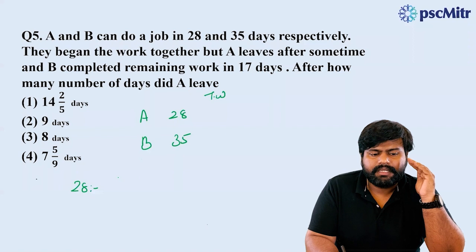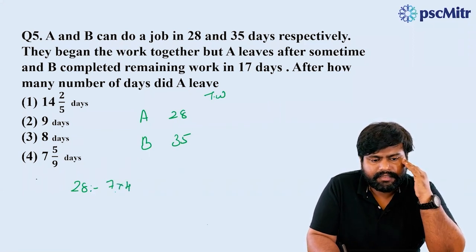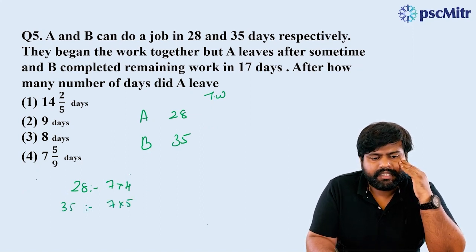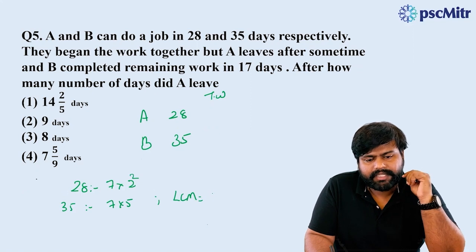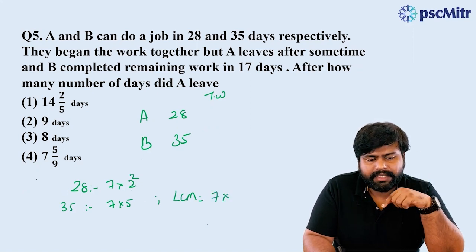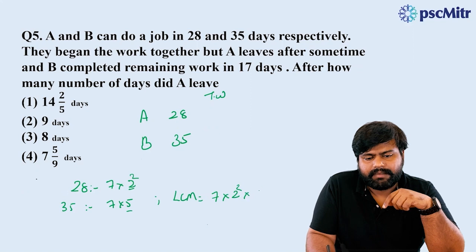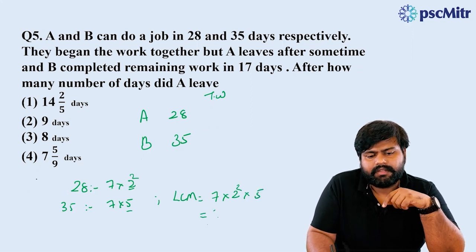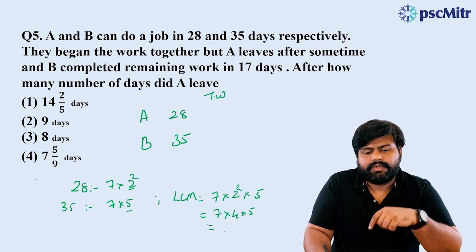I have the total work. I will find the L.C.M. of A and B. We have a difference in L.C.M. — 2 to the highest power: 3 is 2 squared. 2 squared into 5: 7 into 4 into 5, giving 28 into 5, which is 140.